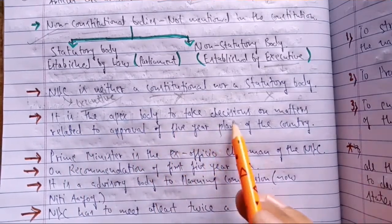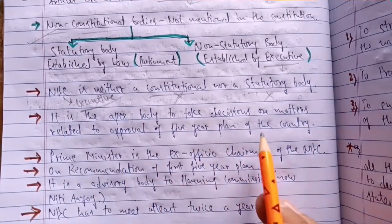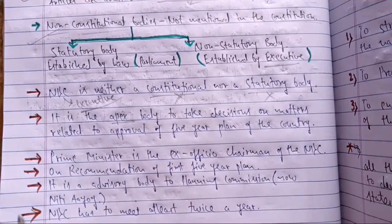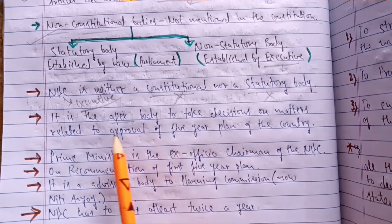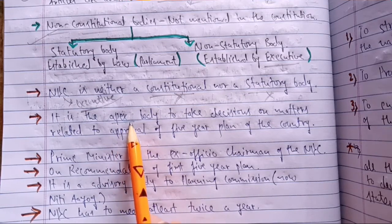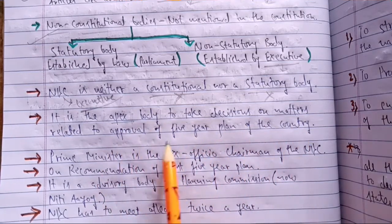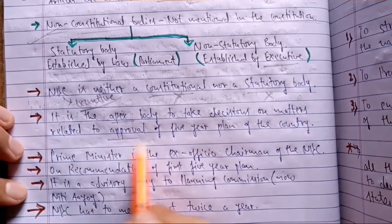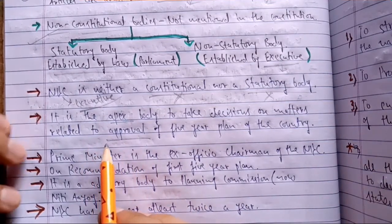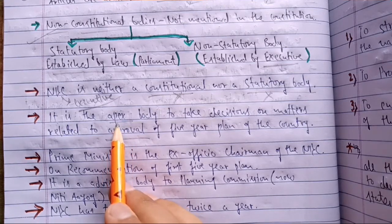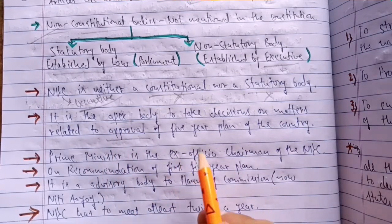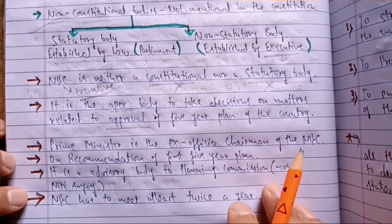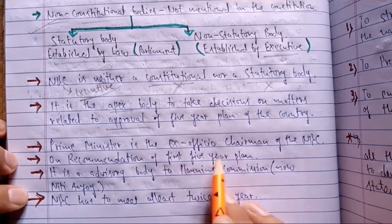NDC is the apex body to take decisions on matters related to the approval of Five-Year Plans of the country. Apex means at the top level — just as the Supreme Court is the highest court in the judiciary. In the field of planning, NDC was the supreme body to approve Five-Year Plans. Whenever there was a plan proposed by the National Planning Commission, the approval was given by NDC. NDC was the biggest and most powerful body at the apex level that approved all plans proposed by the Planning Commission.